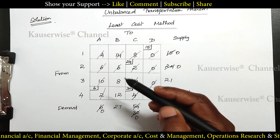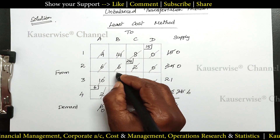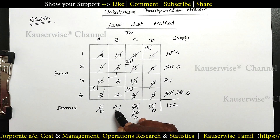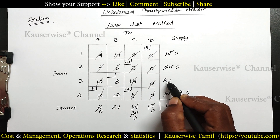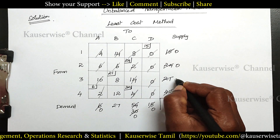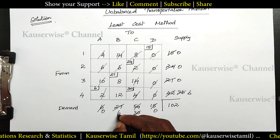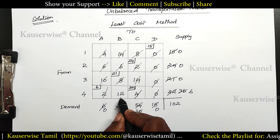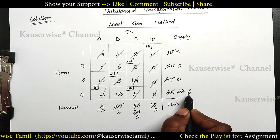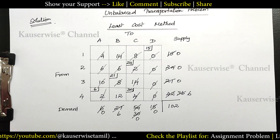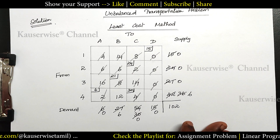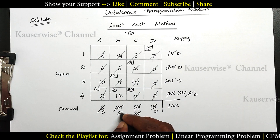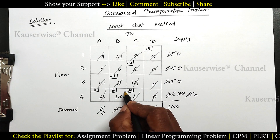Now we have only 2 cells remaining. The least cost is 8, so I allocate this cell by comparing demand and supply: demand 27, supply 21 — 21 is the least. So enter 21; supply becomes 0 and demand balance is 6. Cancel this row. Finally we have only 1 cell and demand and supply are equal — the reason being the problem is balanced — so allocate 6 here. Both become 0 and the last cell is also cancelled.